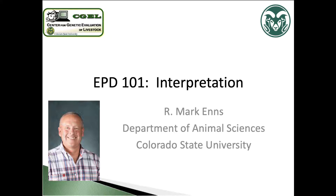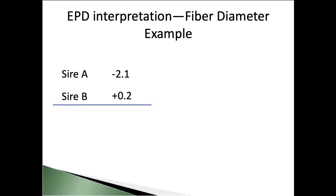EPD, or expected progeny differences, are tools that are available through the Alpaca Owners Association that represent the genetic merit of individuals you might use in your breeding program. In this brief audio-visual presentation, we're going to go through two examples. When we think about EPD, what we're doing is using those tools for traits — characteristics like fiber diameter, fleece weight, standard deviation of fiber diameter, or staple length. We have EPDs for those, and EPD represent the genetic merit of an individual and predict what we would expect in progeny performance due to the genes that are passed from the parent to the offspring.